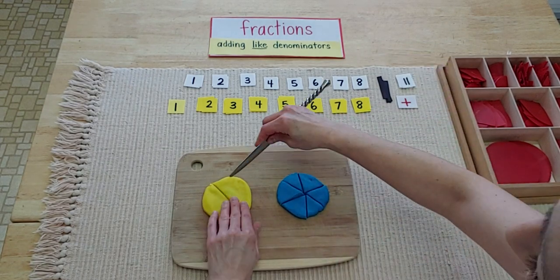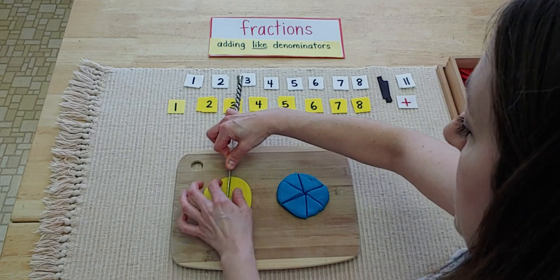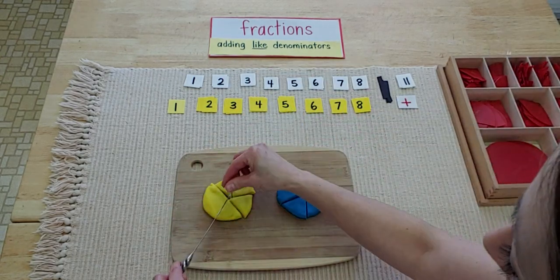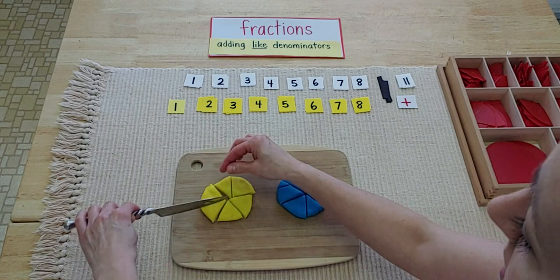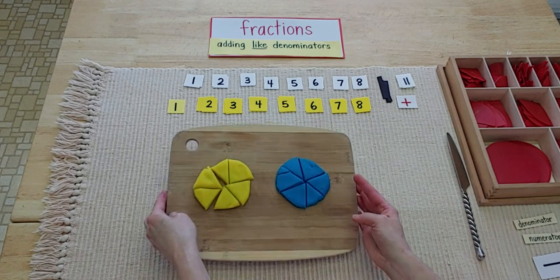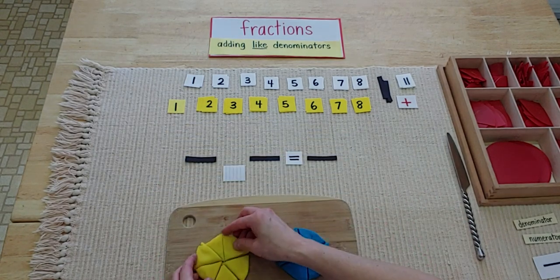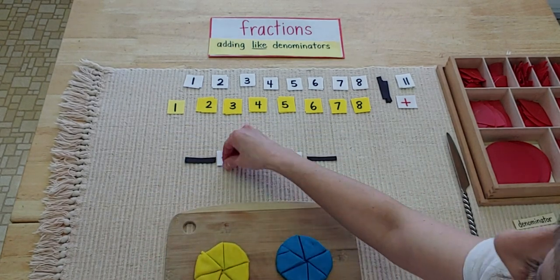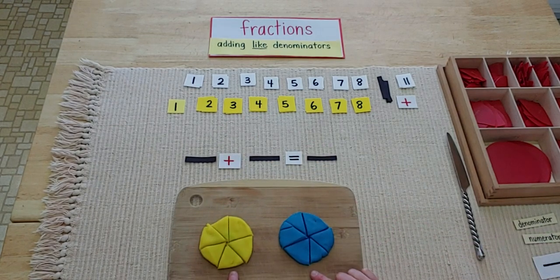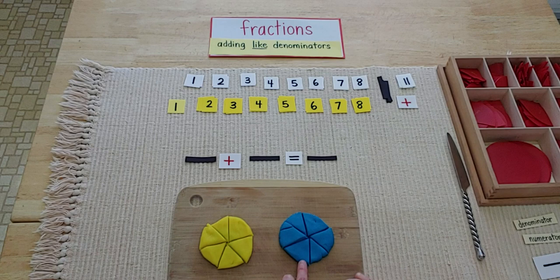And I got my lemon pie over here. Let's see. One. Yum, yum, yum. If you like sour things, then lemon is the kind of pie you might want. Okay. Now we can play with this. Now, remember, these are the six family. I have six in the lemon and six in my blueberry.